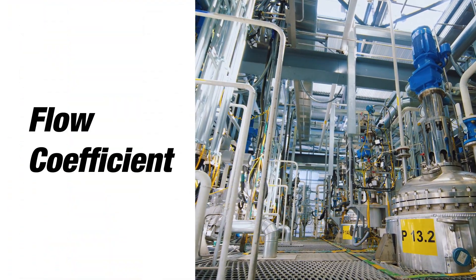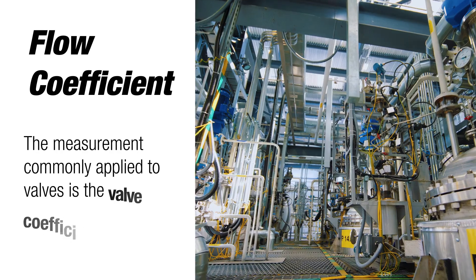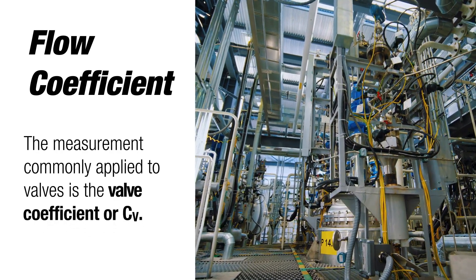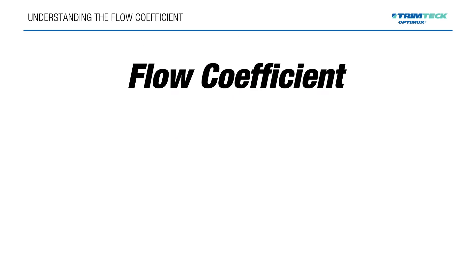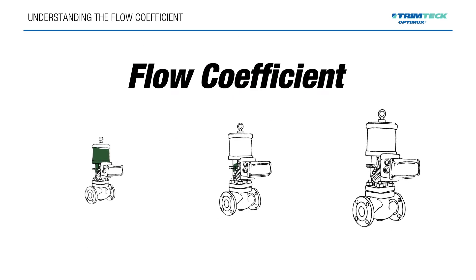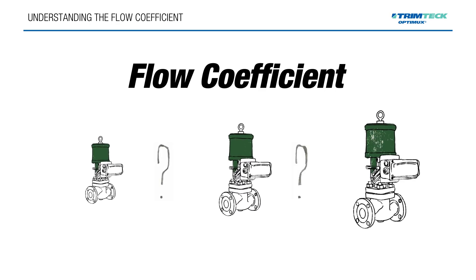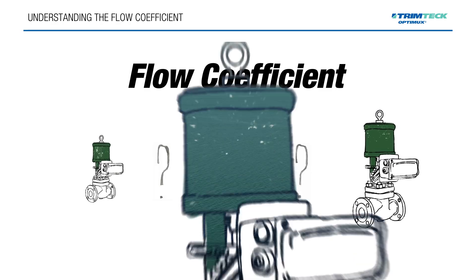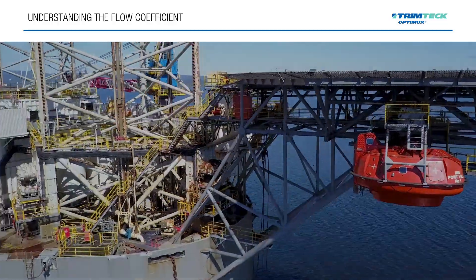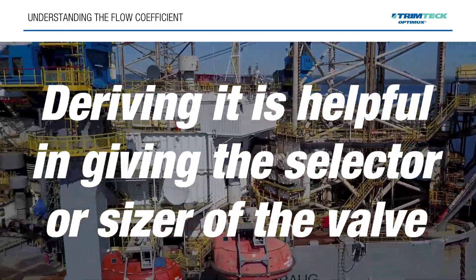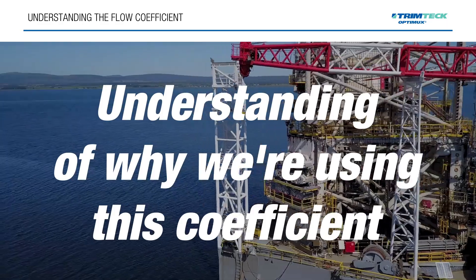Today we're going to talk about the flow coefficient. The measurement commonly applied to valves is the valve coefficient or CV. Sometimes it's referred to as a flow coefficient, and this is a coefficient used to determine the valve size that will best allow the valve to pass a required flow rate while providing control of the process fluid. Most people who have sized and selected valves will be familiar with this measurement, but not everybody understands where it comes from. Deriving it is helpful in giving the selector or sizer of the valve an understanding of why we use this coefficient to compare various valves.